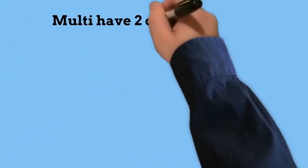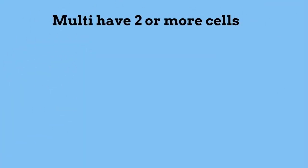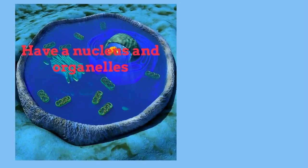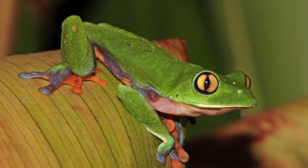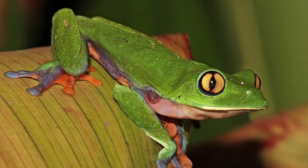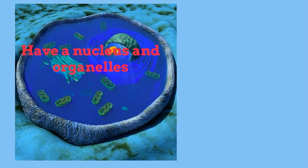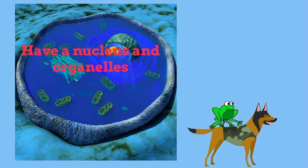Multicellular organisms have two or more cells. All multicellular organisms are eukaryotic. Some examples are frogs, dogs, and humans.